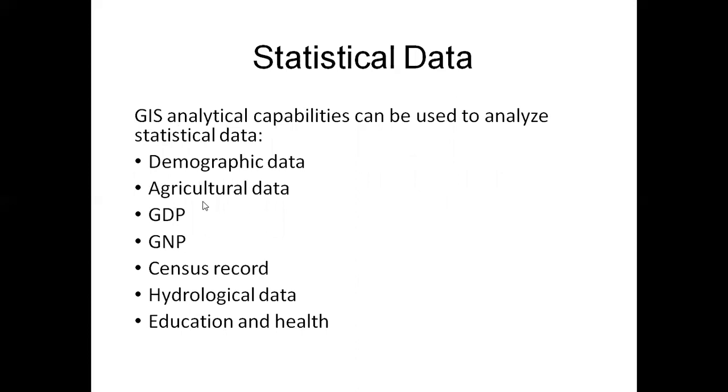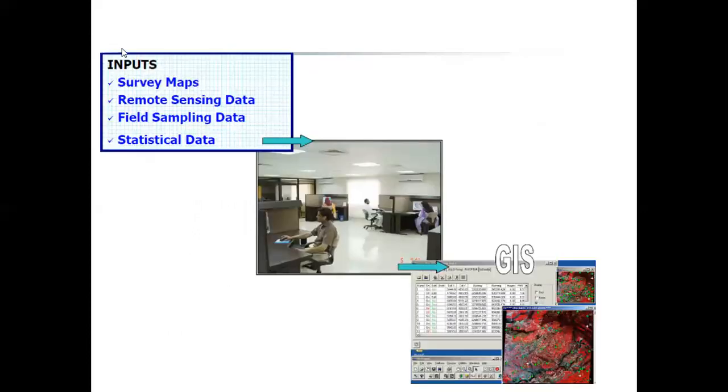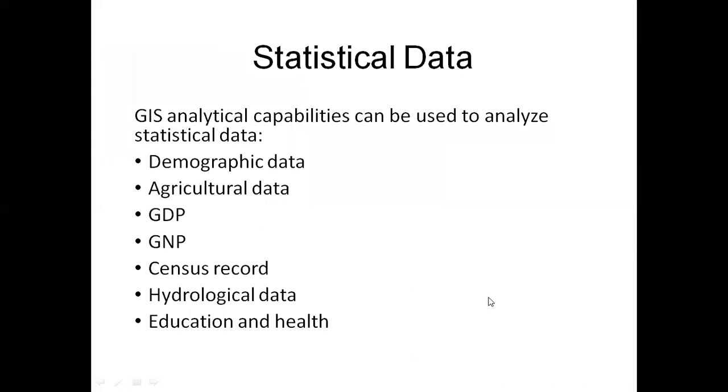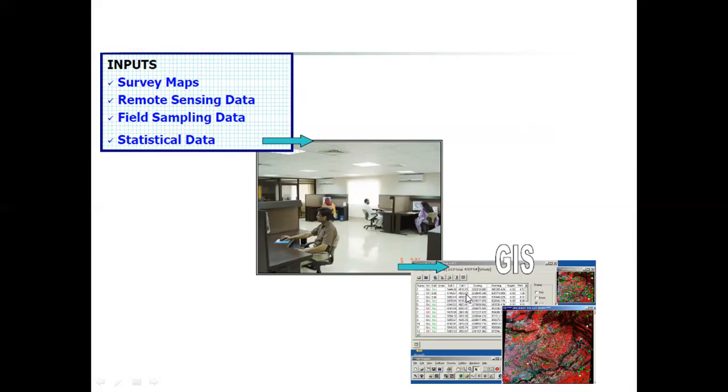Even if you look at our demographic data and population data, we make graphs and maps, agricultural data, GDP, GNP, water-related data, education and health data - all the data we call statistical data and use it in a better way to understand and study. In the last slide, we have maps, remote sensing data, field sampling data, statistical data, and a worker working through GIS. In this result, you have a database and a relevant map. If you go to a map and select it, it will open its relevant database. If you go to a database and click it, it will open its relevant maps.